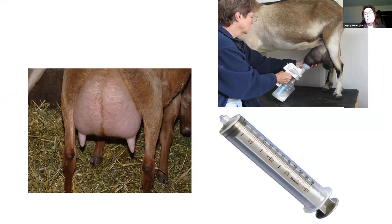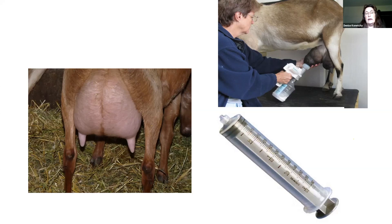Make sure that these lambs and kids can nurse. This picture shows a goat with a very engorged mammary gland and consequently very engorged nipples — these youngsters can't even get their mouths around that to nurse. These are animals you may need to remove some of the colostrum from and even going forward milk them if they're really heavy milkers, until the lamb or kid gets big enough to get around that nipple and nurse effectively.